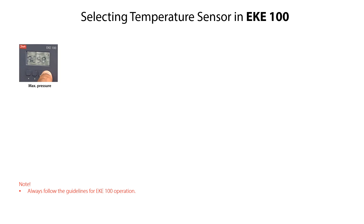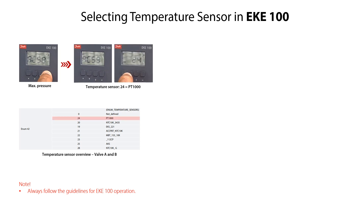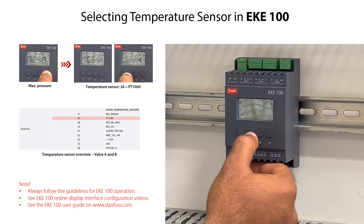The next step is to select a suitable valve A temperature sensor. In this example we select the PT1000. From the AC58 mode, press the arrow down key to access the available temperature sensors for valve A, specified as AC59. Press the enter key to access the available temperature sensors. Press the arrow up or down keys to find and select the needed temperature sensor. Select 24 corresponding to PT1000. Press enter to confirm the value and return to the AC59 mode.